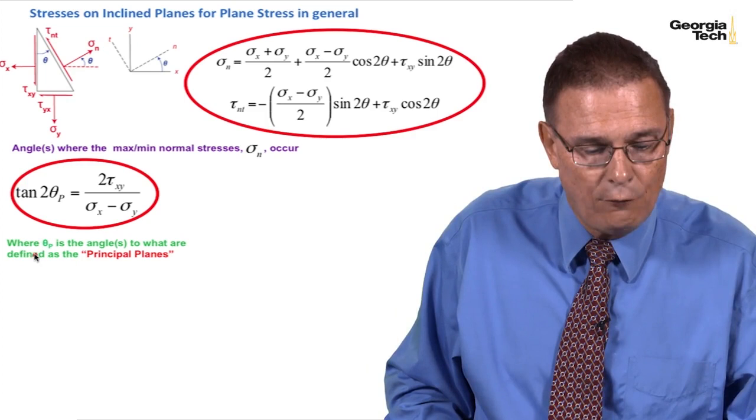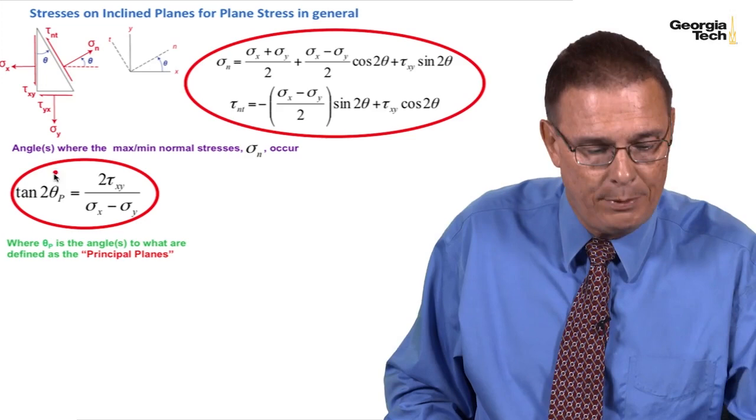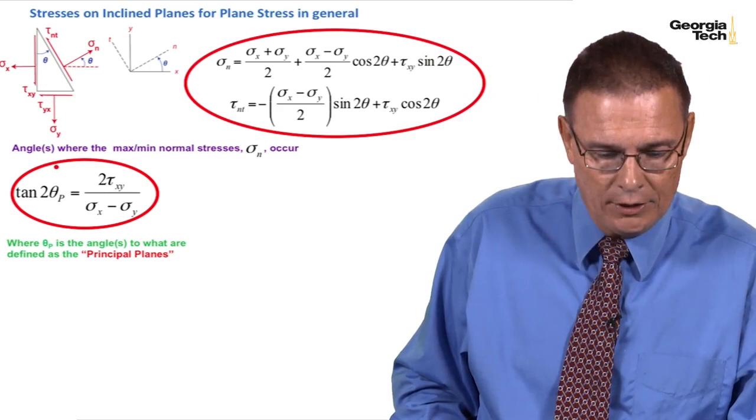Where theta sub p is the angle to which is defined the principal planes. And notice that on the block itself we're working with theta sub p. In the formula we're working with 2 theta sub p. And so there's that relationship.